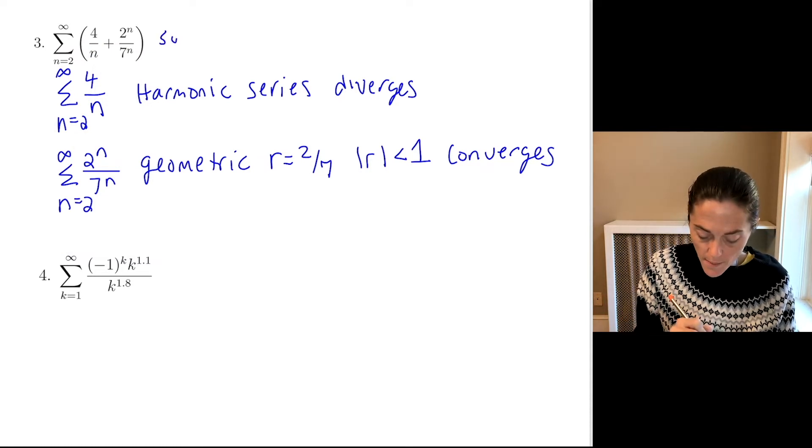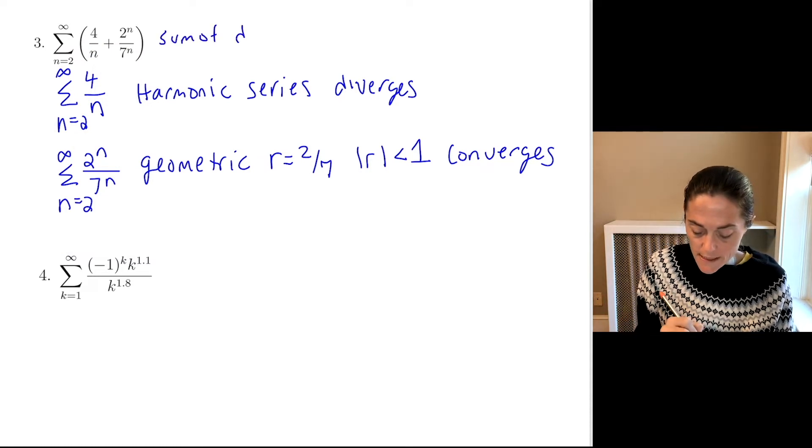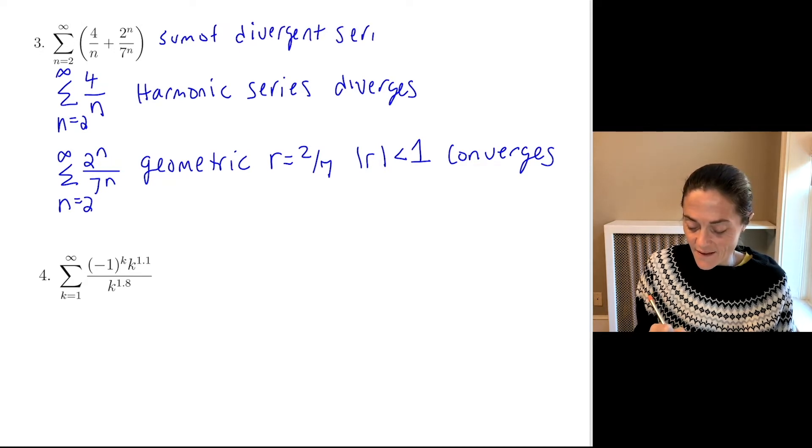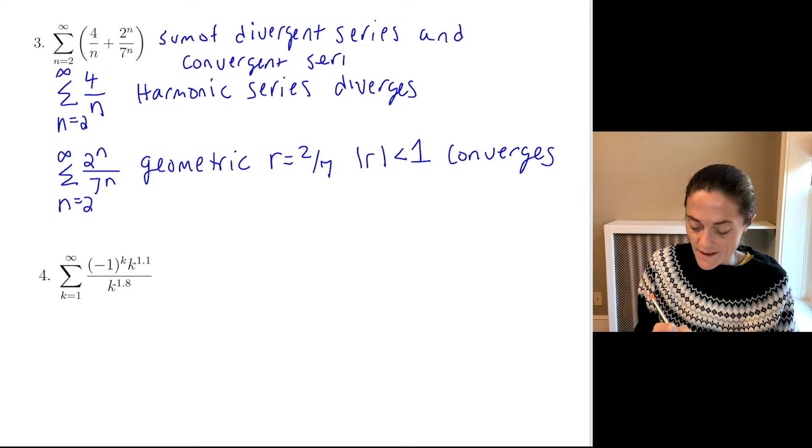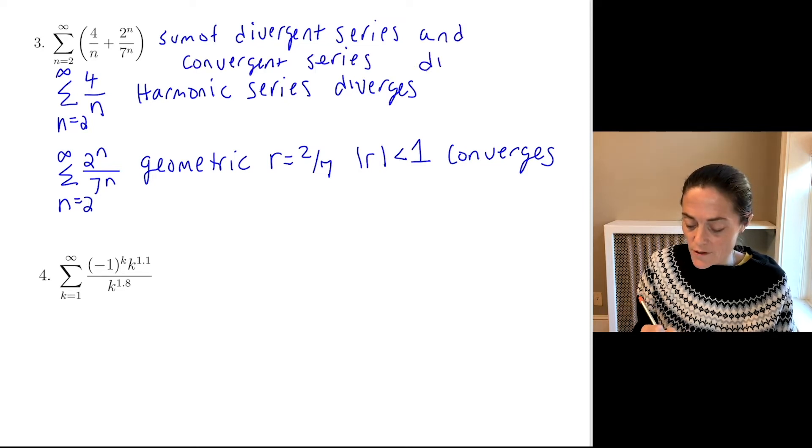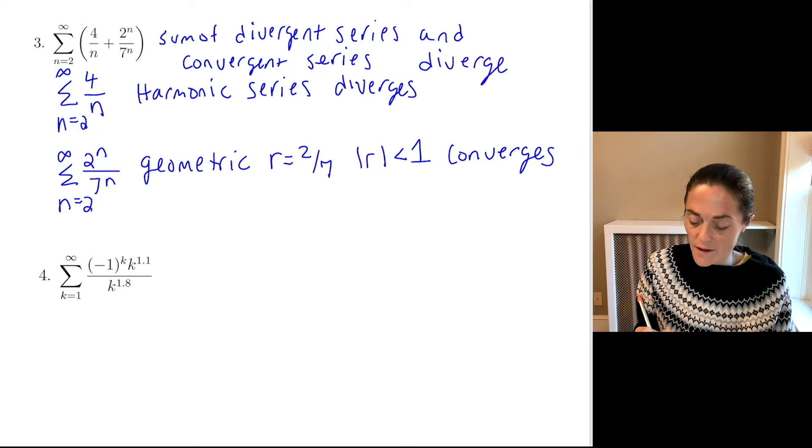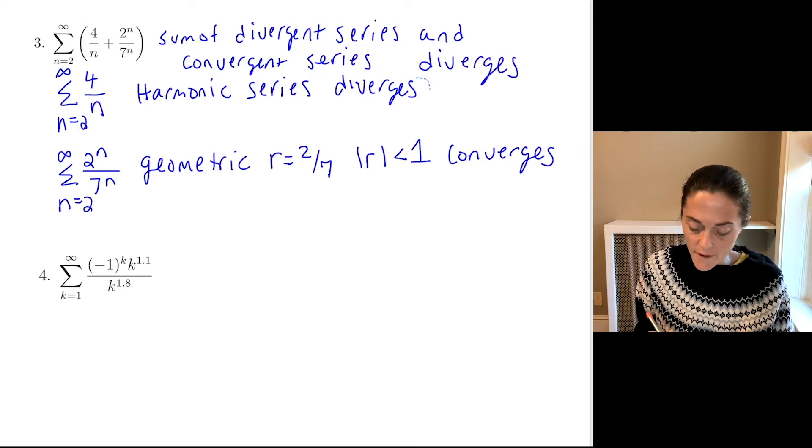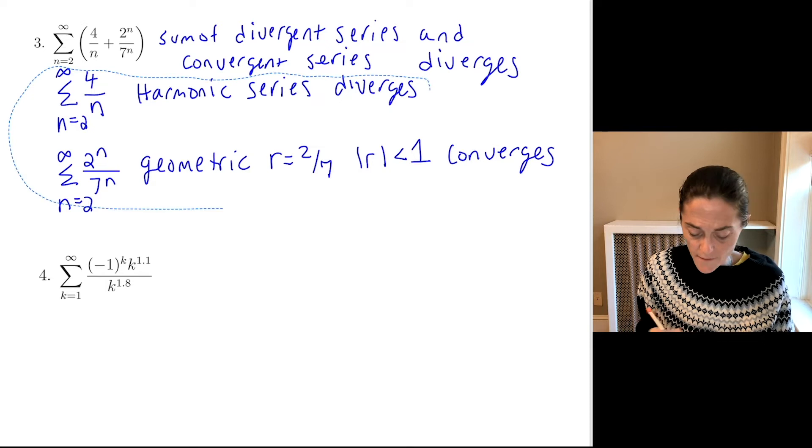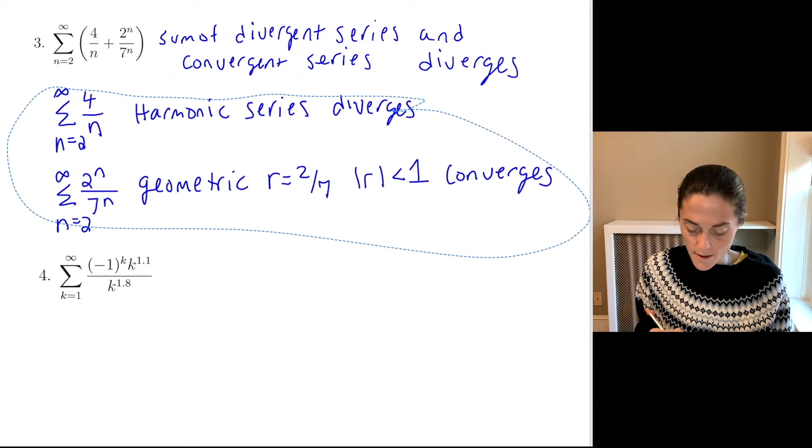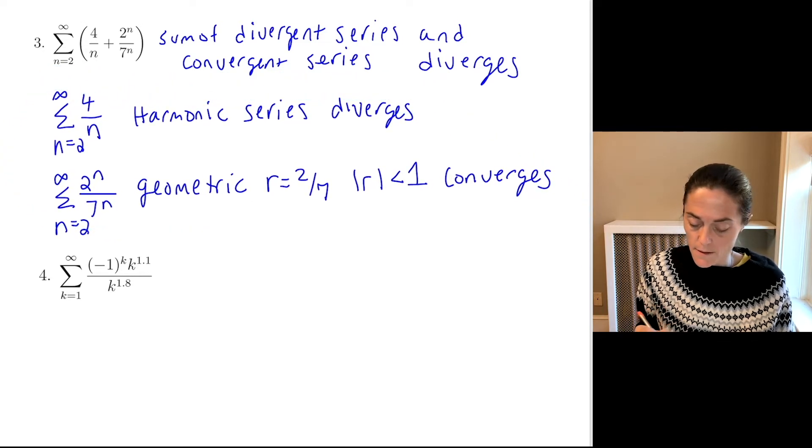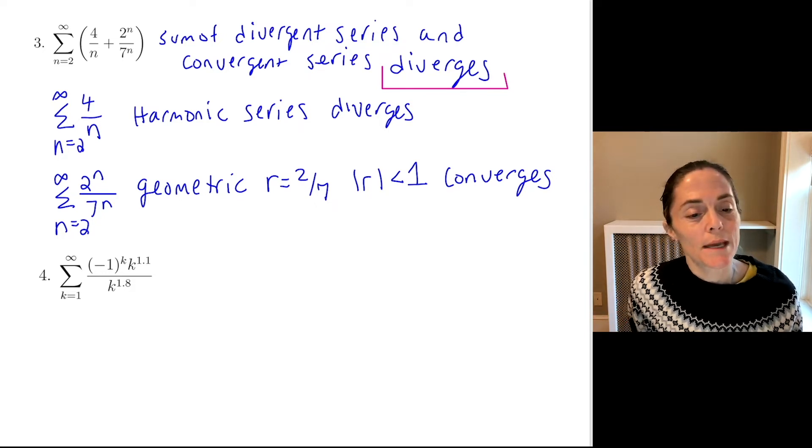So what do I see? I have one series that diverges, I have one series that converges, and I add them term by term. Well, the sum of a divergent series and a convergent series, this will diverge. So this is my final answer. We have a divergent series and we use properties of series here to conclude this.